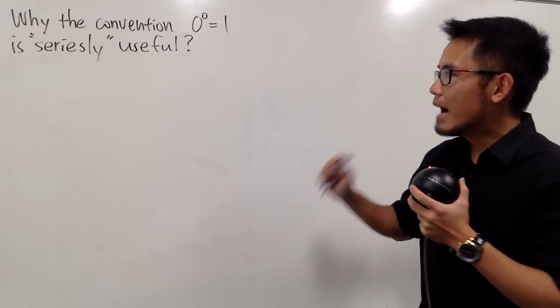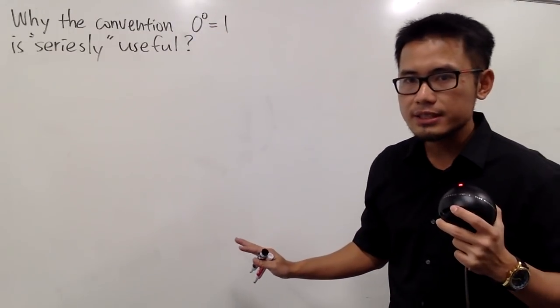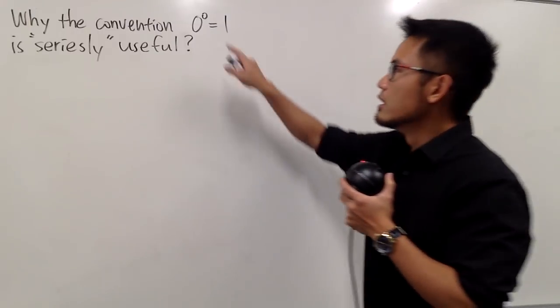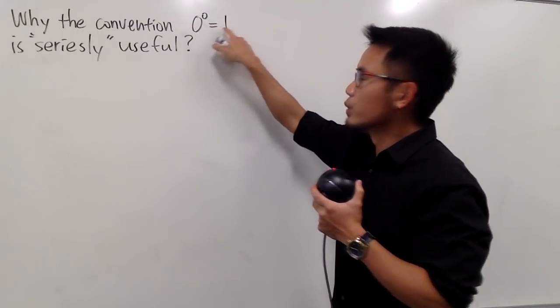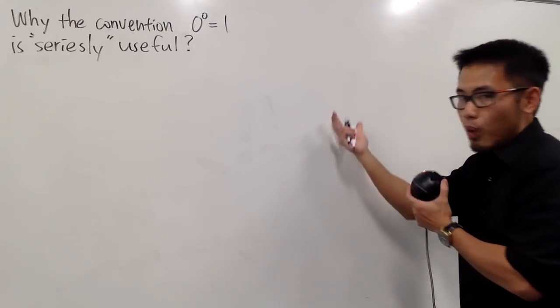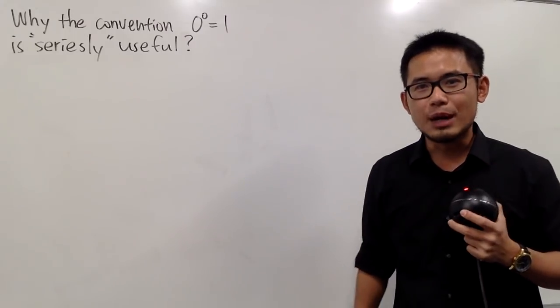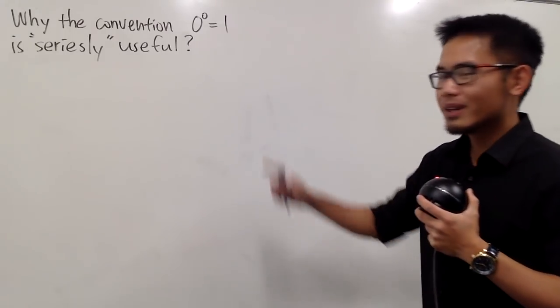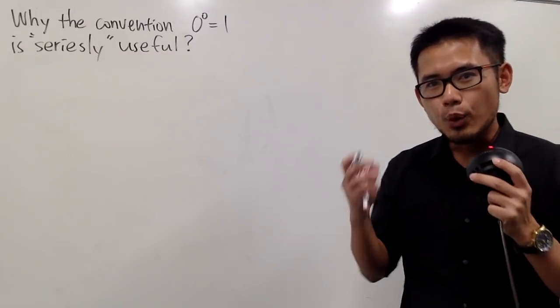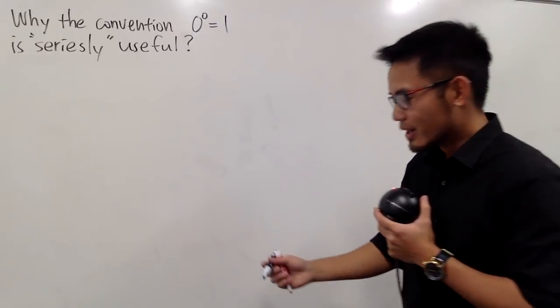And I want to tell you guys that I'm not saying 0 to the 0 is equal to 1 in all the situations, and I'm also not talking about the limit. I'm just saying we will let 0 to the 0 equal to 1 in some situations, and because once we make that into 1, a lot of things will work out nicely. So what situations are we talking about? Well, this is seriously useful. So of course we're talking about series.